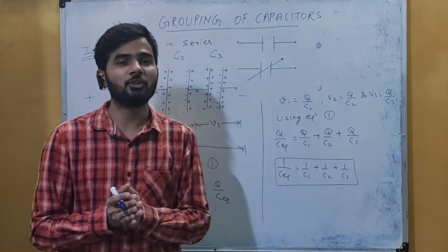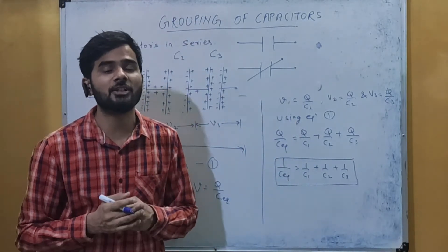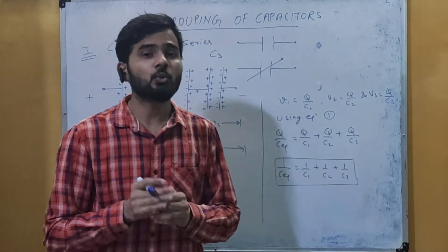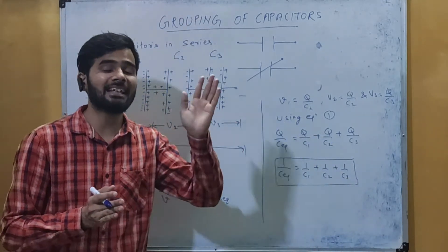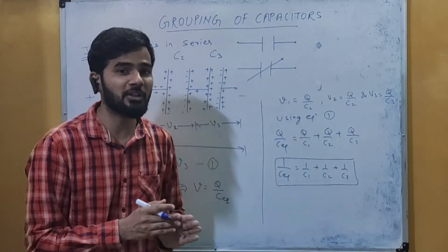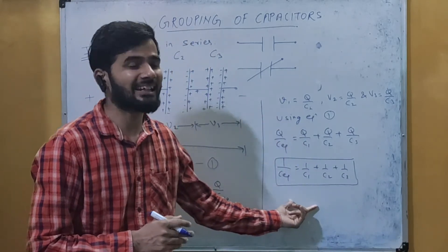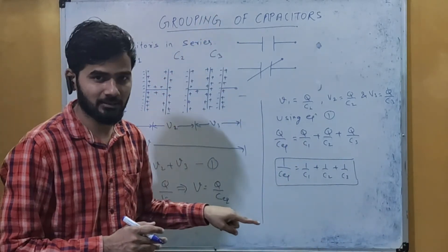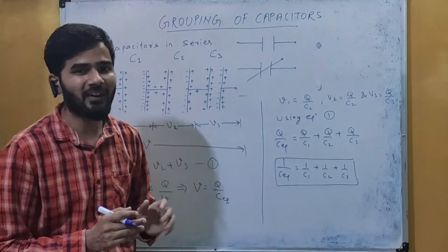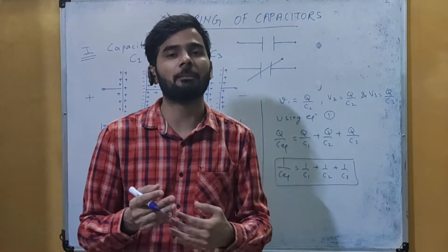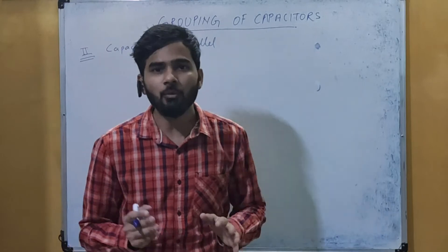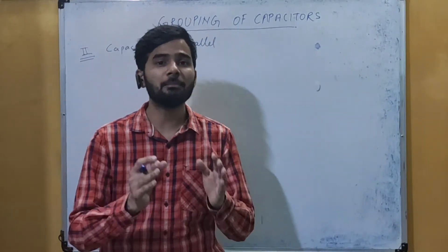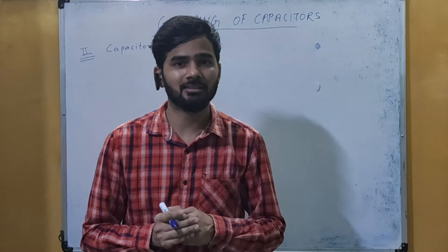In class 10 you studied the combination of resistors in series and parallel. Whatever formula we obtained for the parallel combination of resistors, the same type of formula appears in the series combination of capacitors. This is how we find the equivalent capacitance for capacitors in series. Now we will see capacitors in parallel.